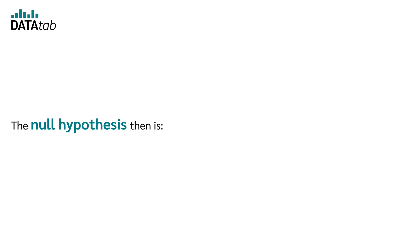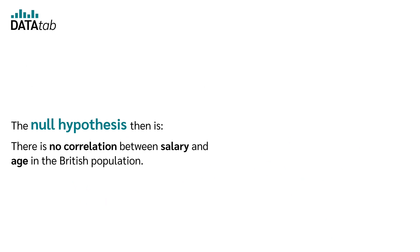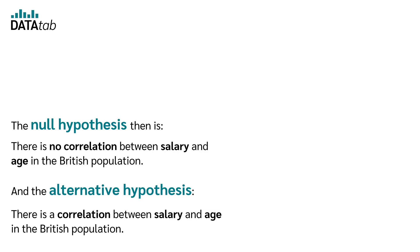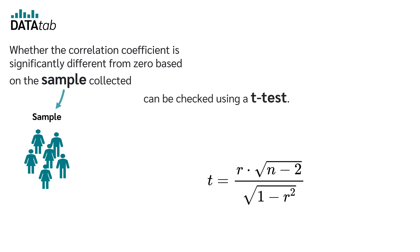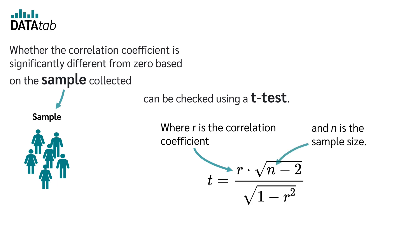The null hypothesis then is: there is no correlation between salary and age in the British population. And the alternative hypothesis: there is a correlation between salary and age in the British population. Whether the correlation coefficient is significantly different from zero, based on the sample collected, can be checked using a t-test, where r is the correlation coefficient and n is the sample size.